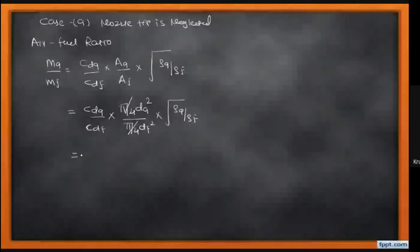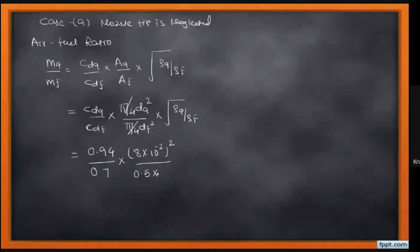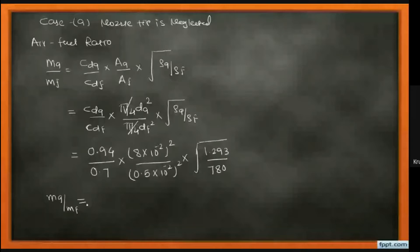Plugging in values: Cd_air = 0.94, Cd_fuel = 0.7, throat diameter = 8×10⁻² meters, fuel orifice diameter = 0.5×10⁻² meters, density of air = 1.293, density of fuel = 780. Solving this, the air-fuel ratio comes out to 13.99, which is approximately 14.